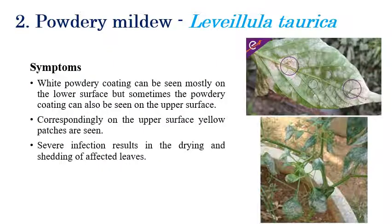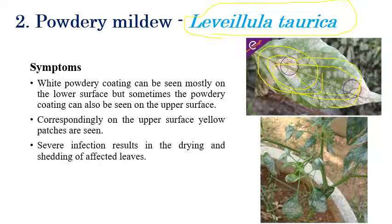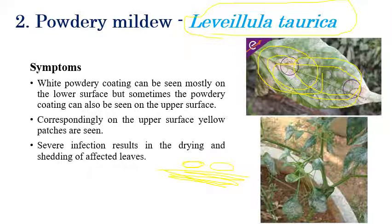Coming to the second disease, powdery mildew, which is caused by Leveillula taurica — a very important disease in chilli. White color powdery growth or patches can be seen on the lower surface of leaves. On the upper surface, yellow color halo or yellow color patches can be seen. In severe cases of infection, drying and shedding of leaves and dying of plants will happen. Shedding of leaves is very commonly seen in chilli powdery mildew.